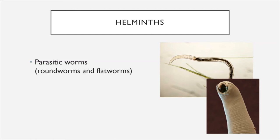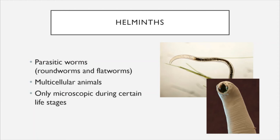The last category of microbes we will study are the helminths. Helminths is synonymous with parasitic worms. This includes two major categories: roundworms, synonymous with nematodes, and flatworms, which are somewhat synonymous with tapeworms. Helminths are multicellular animals and are only microscopic during certain life stages, such as when they lay eggs or are in early developmental forms. Because they are microscopic for at least some of their lives and are involved in a variety of human diseases, we include helminths in this class.